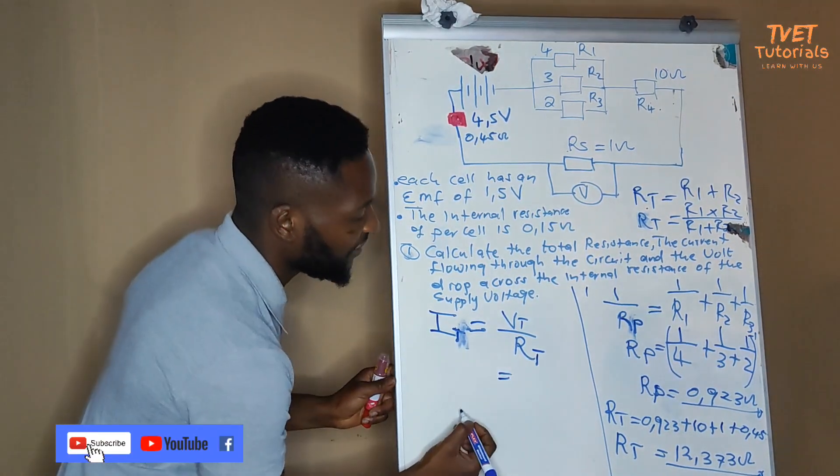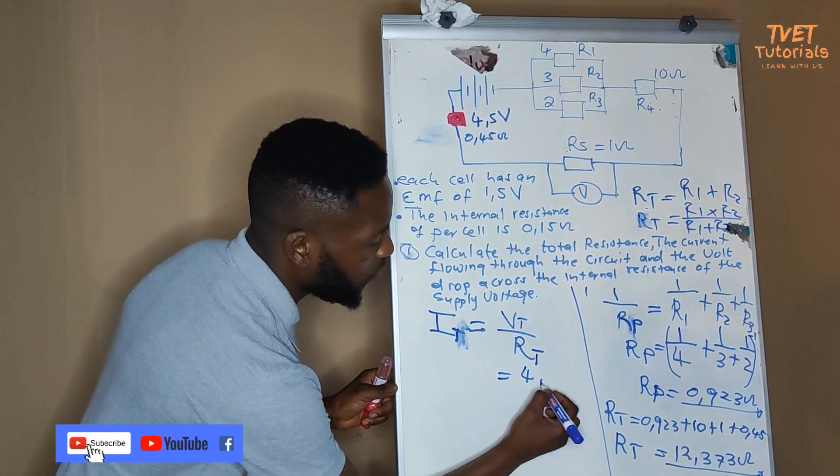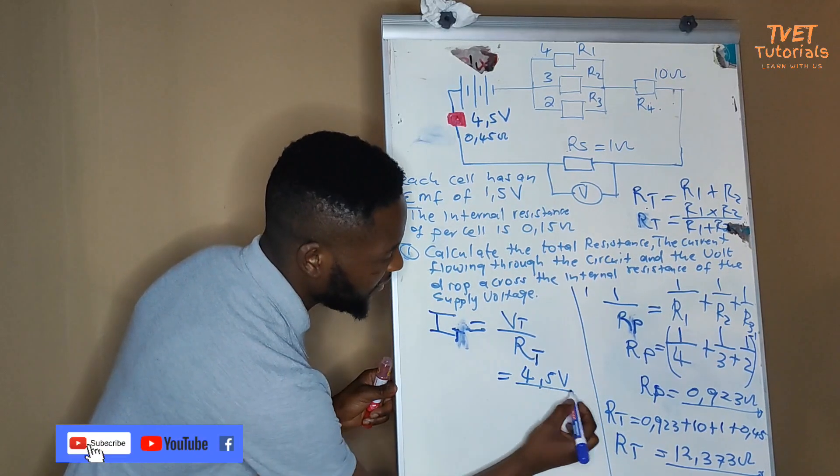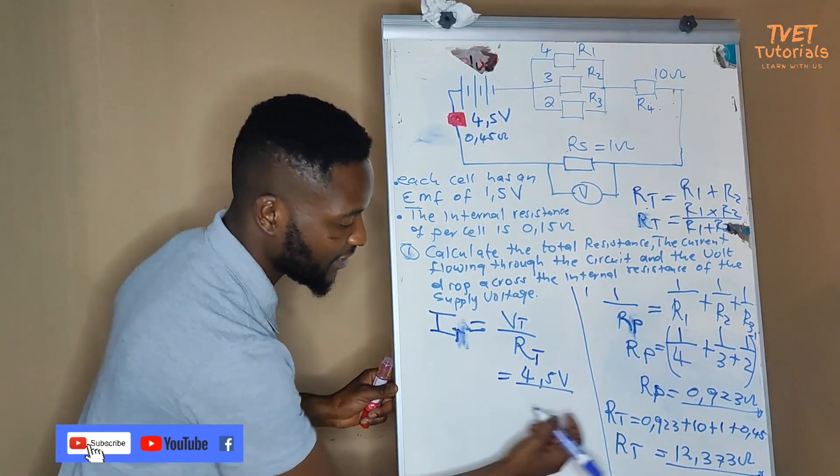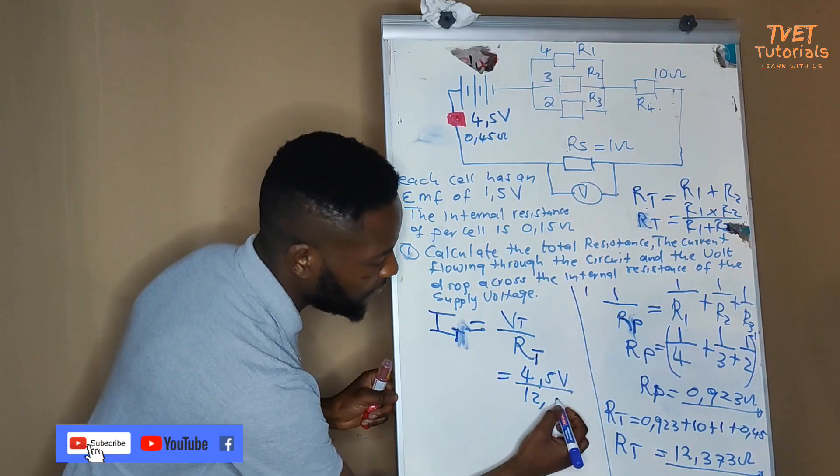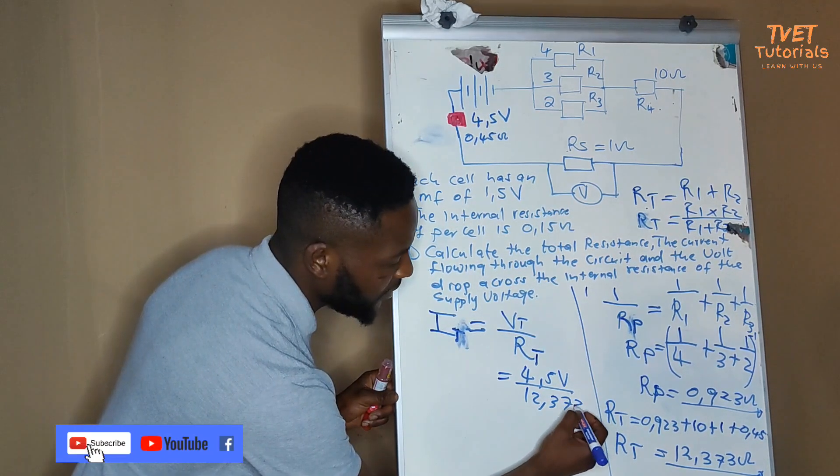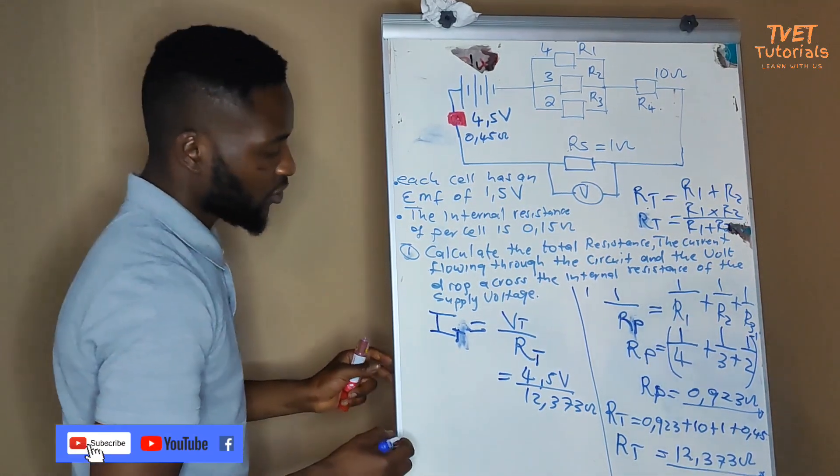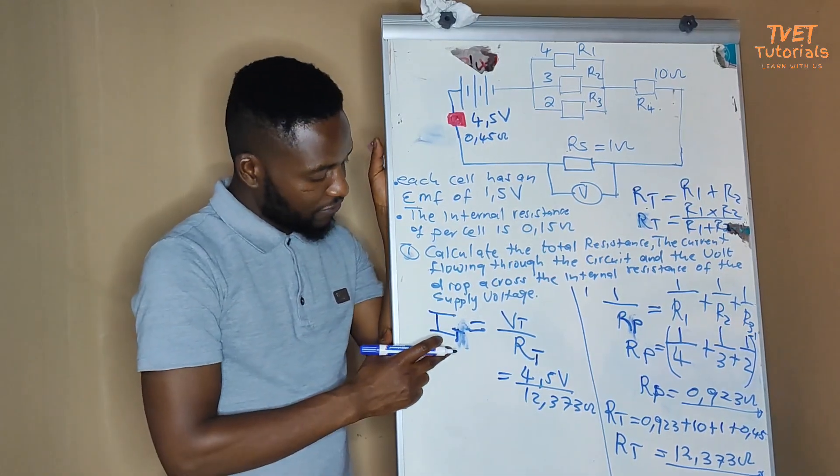Right. So we can substitute our values there. Here we have 4.5 volt divided by our total resistance, 12.373 volts. There is nothing confusing here.